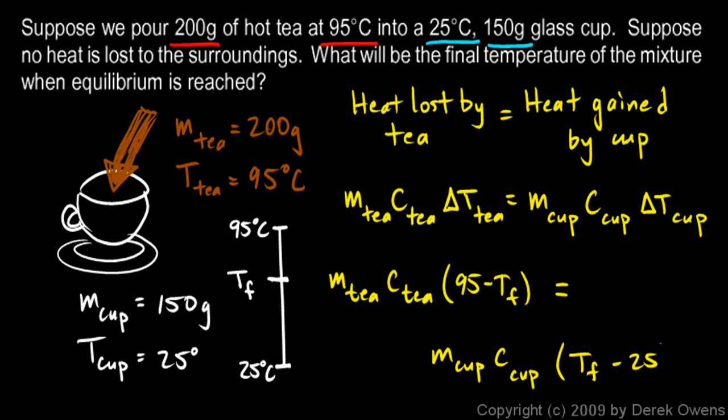For the change in T of the cup, the high number is TF, and the low number is 25. So TF minus 25 comes out to be a positive number. And that's a valid way to think about the problem. The heat lost by the tea, that's a certain amount of heat. How much it lost, we would think of that as a positive number, the amount that it lost.